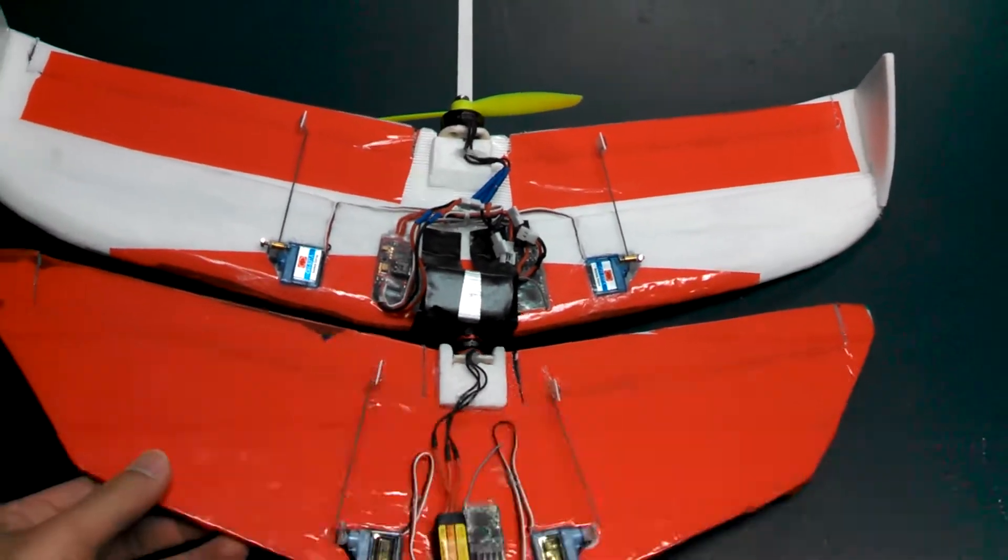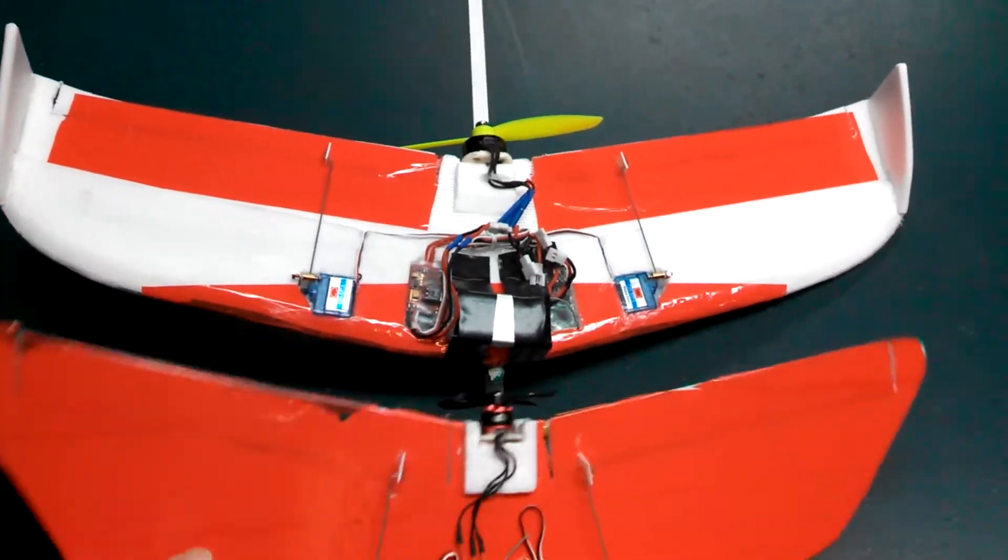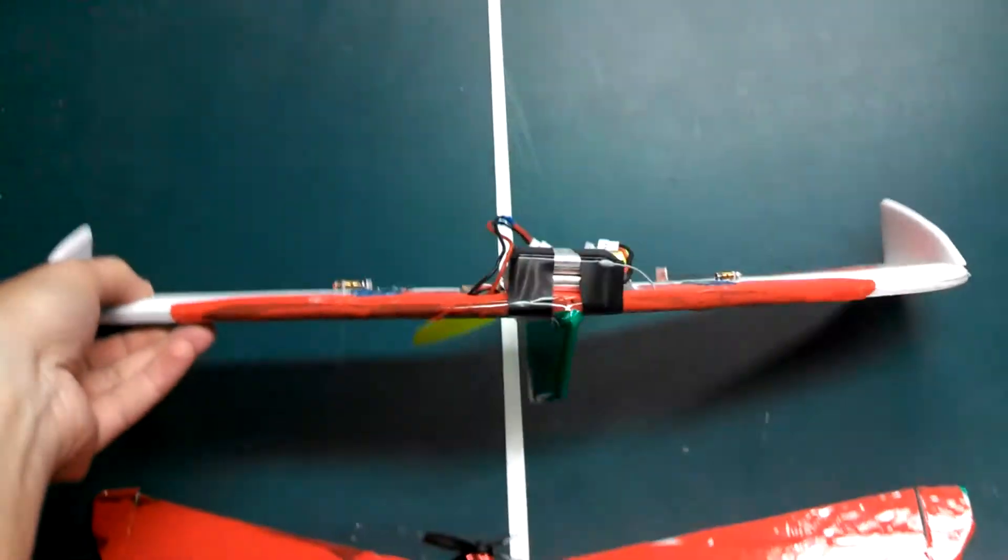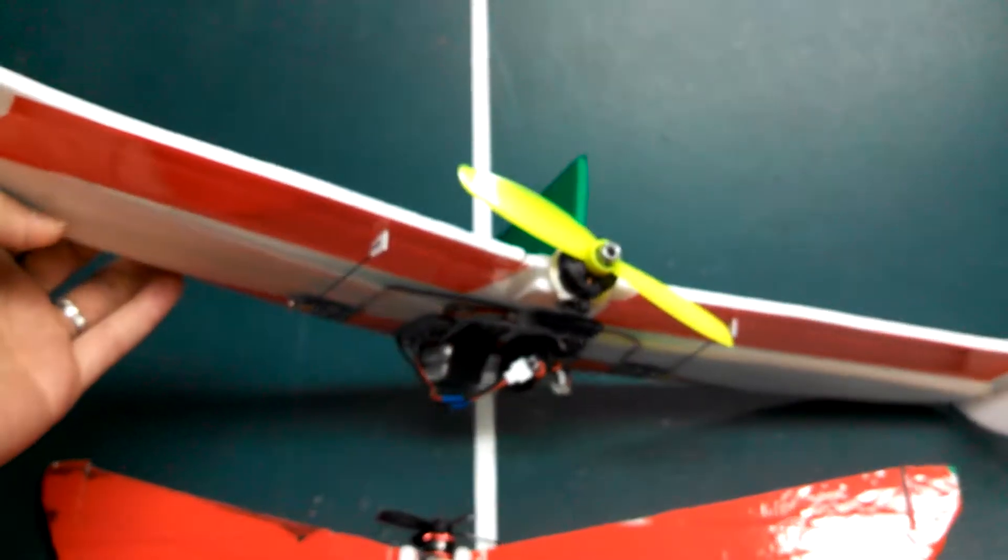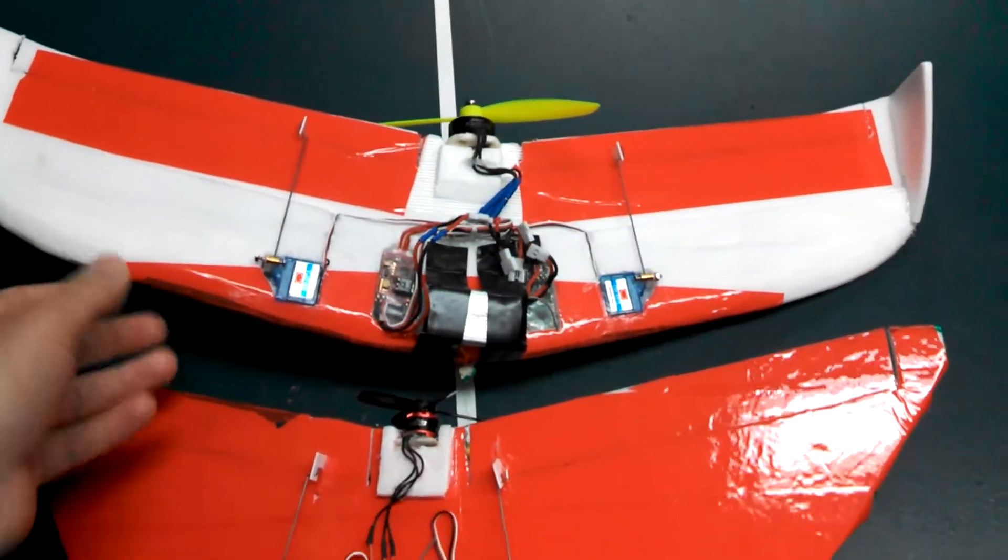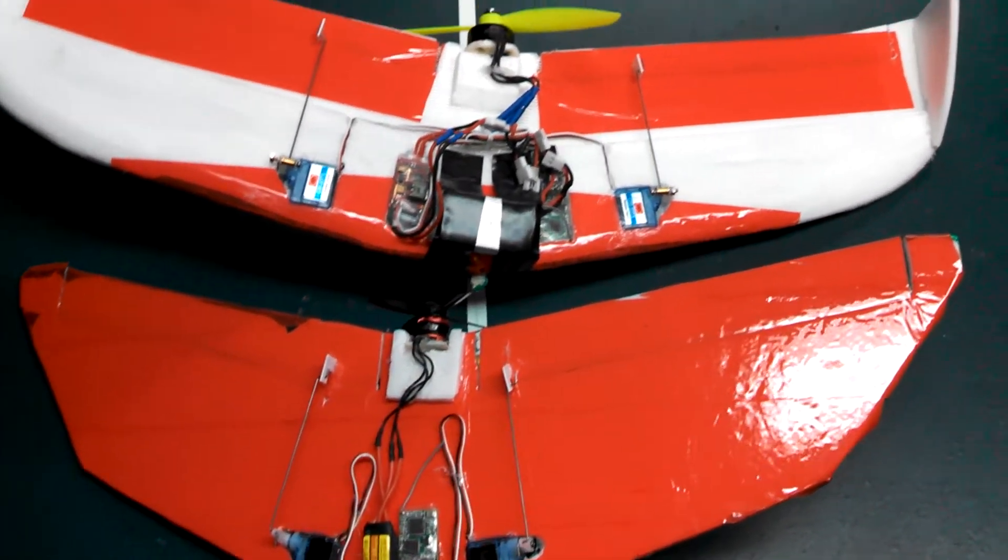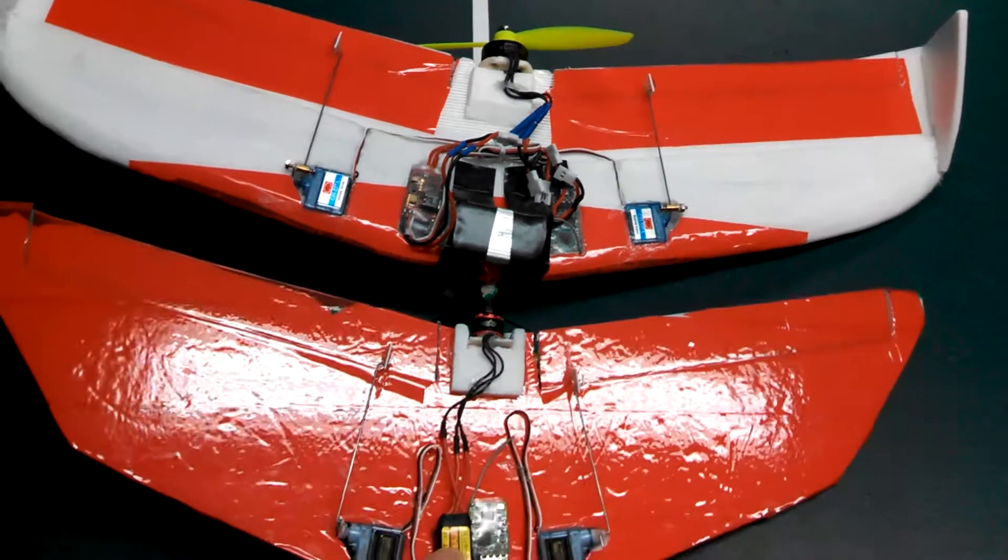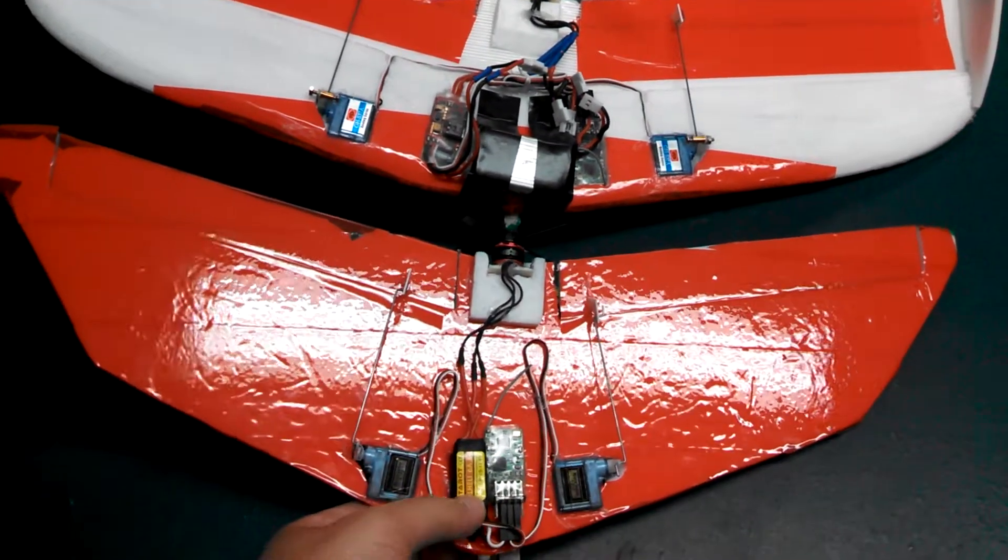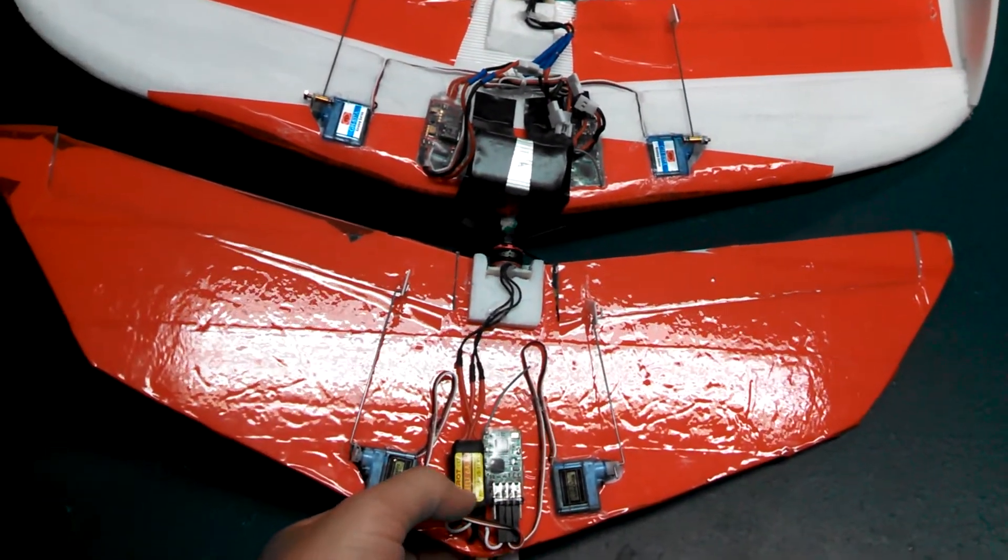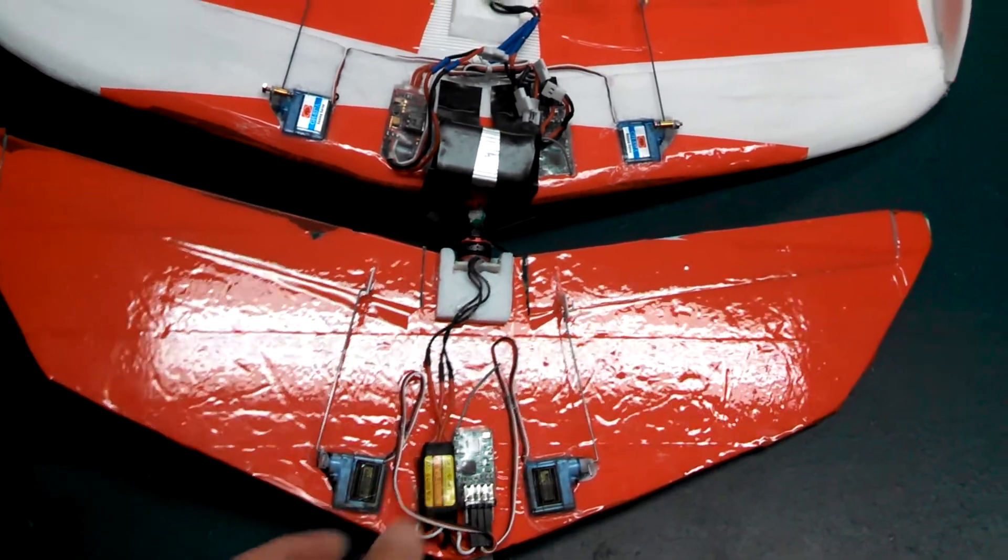The other difference is that this is all flat, whereas this one uses a KF airfoil. Mostly the same except this one uses smaller electronics, less powerful. It's a 6 amp ESC versus a 10 amp.